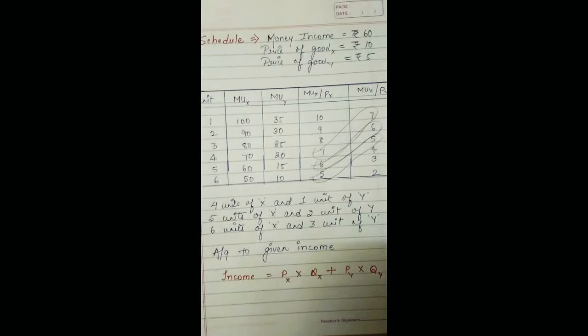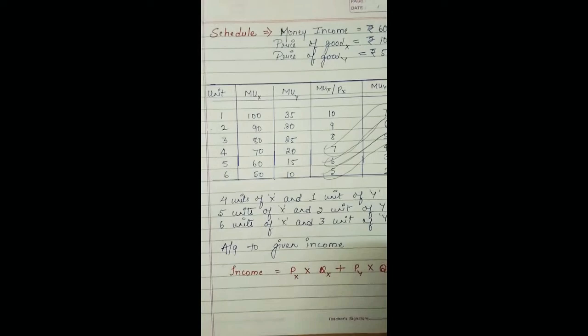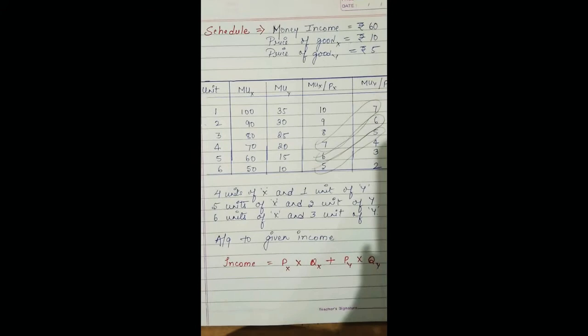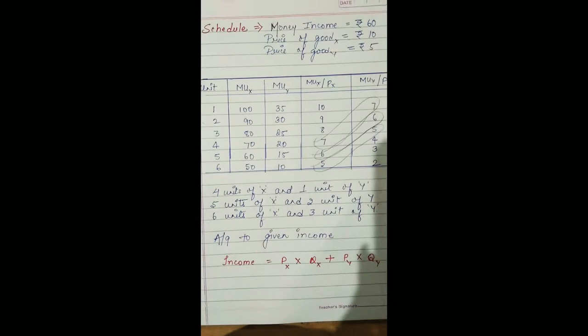Likewise, MUy also goes on declining. At the first unit of Y marginal utility is 35, at the second it is 30, at the third it is 25, at the fourth it is 20, at the fifth it is 15, and at the sixth it is 10. Hence marginal utility tends to decline with every additional unit of consumption.